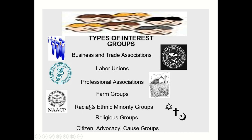Racial and Ethnic Minority Groups exist to represent a certain racial or ethnic segment of the population. This could be the NAACP — the National Association for the Advancement of Colored People — which represents African Americans. It could be LULAC, the League of United Latin American Citizens; La Raza; or MALDEF, the Mexican American Legal Defense and Education Fund. These last three groups exist to help Hispanics.